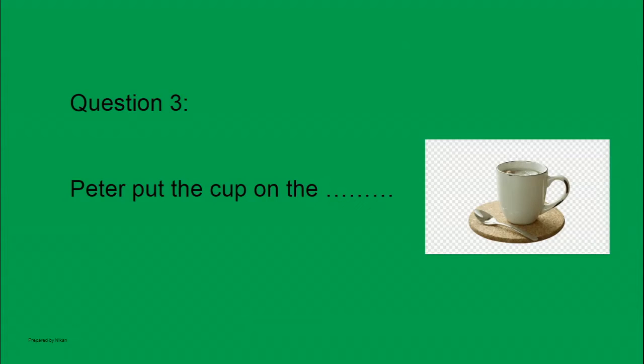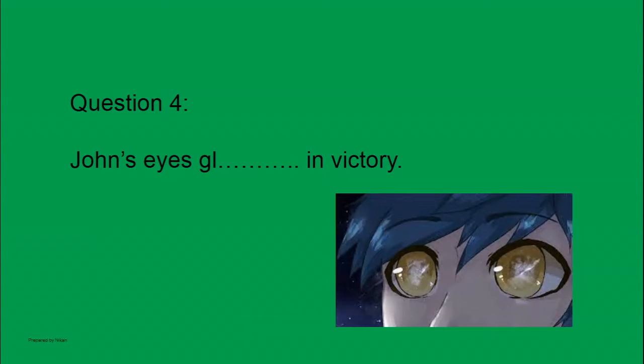on the... what do we call that object under the cup? Question number four: John's eyes blank in victory. What's